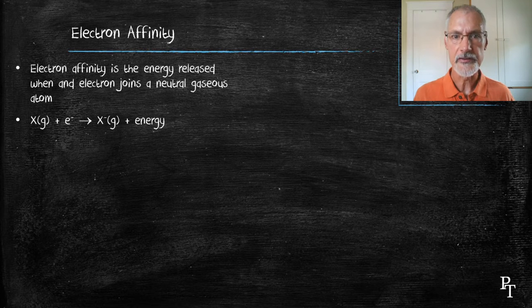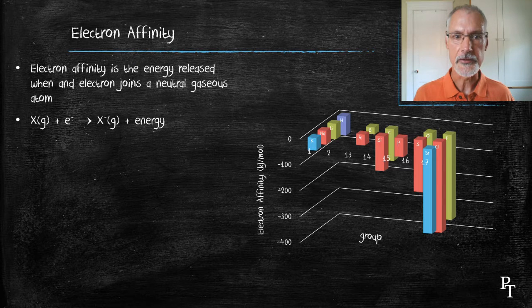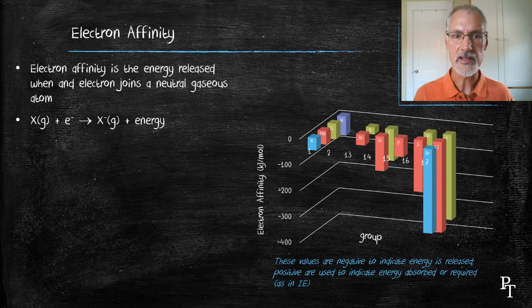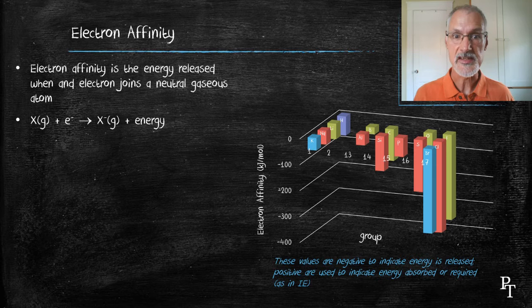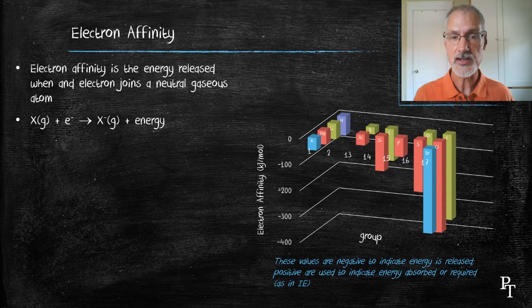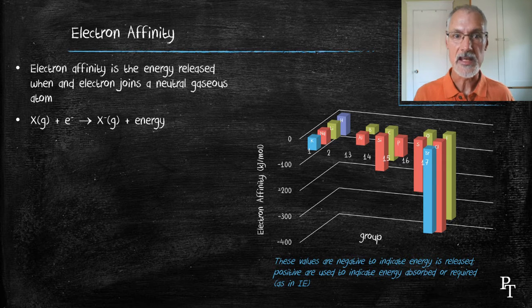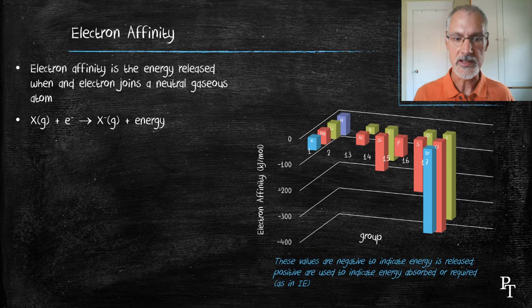That results in this graph. You'll notice here the negative values. Negative values are the way that a chemist essentially communicates that energy is released, as opposed to absorbed. You might recall in our previous example for ionization energy, energy was absorbed or required to make the reaction happen. In the case of electron affinity, energy is released.